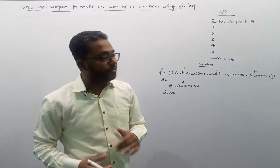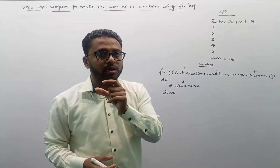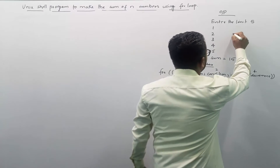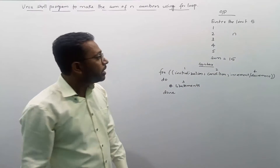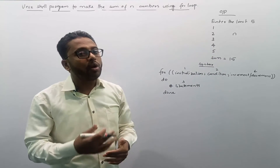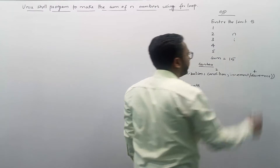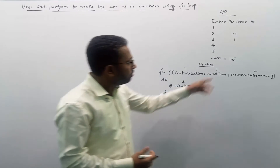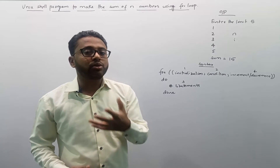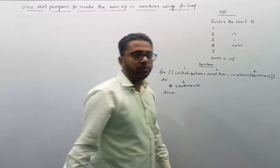To get the desired output, we need to identify our variables. We need a variable 'n' to hold the user-entered limit, a variable 'i' to run our for loop from 1 to 5, and a variable 'sum' to hold the output — the sum of those numbers.